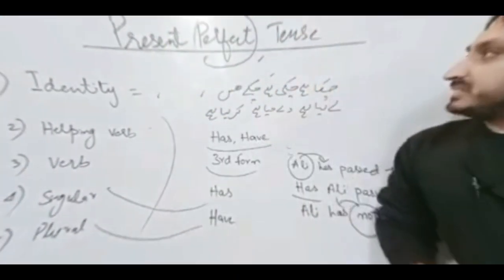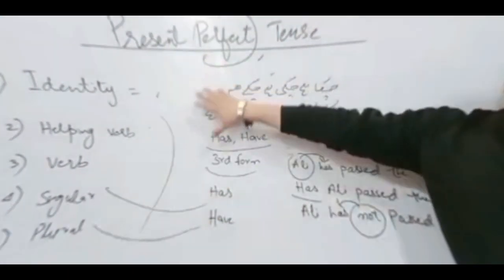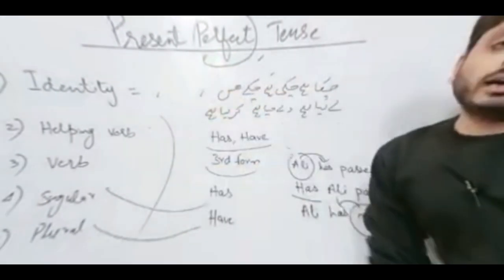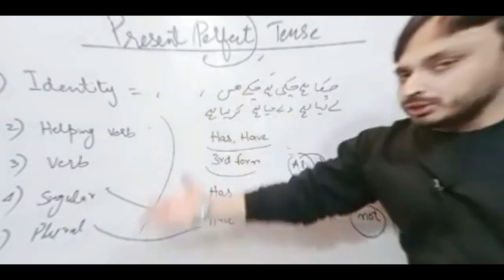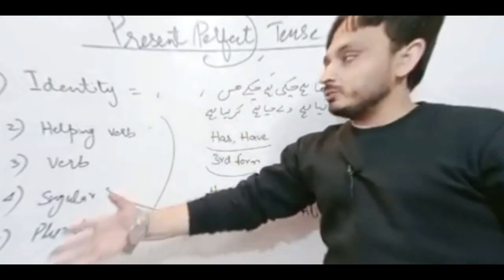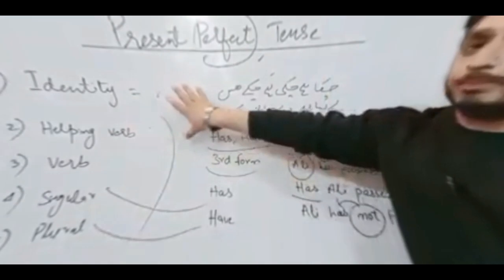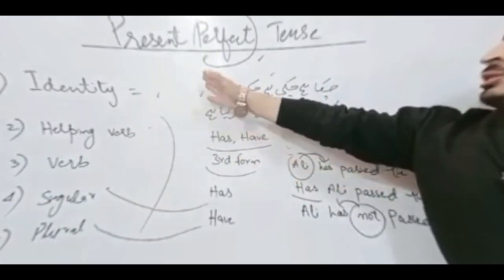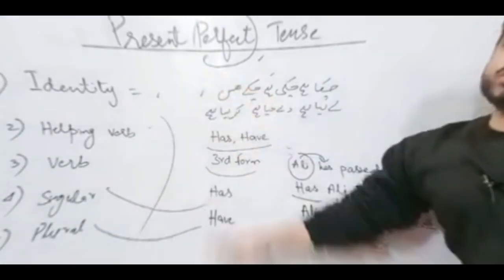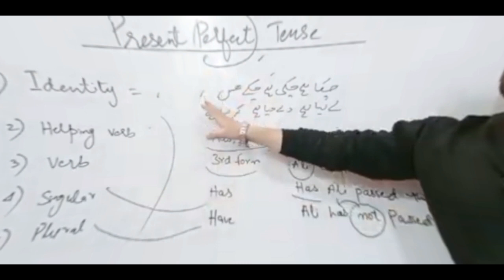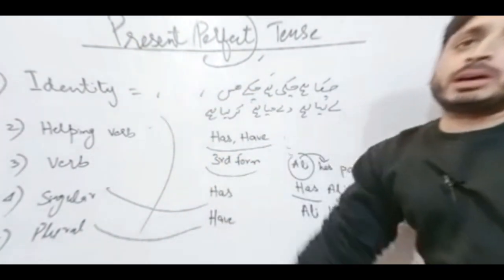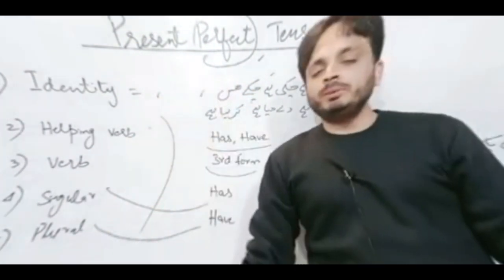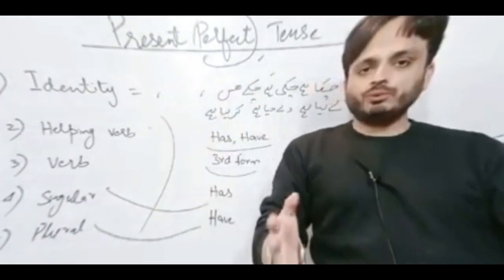So basically this was our present perfect tense, and I taught you about making interrogative and negative as well. Remember its identity. And if you are a Desi student, you can take help from the Urdu identities as well, and then apply the formula. I think that structure would be really helpful for you.